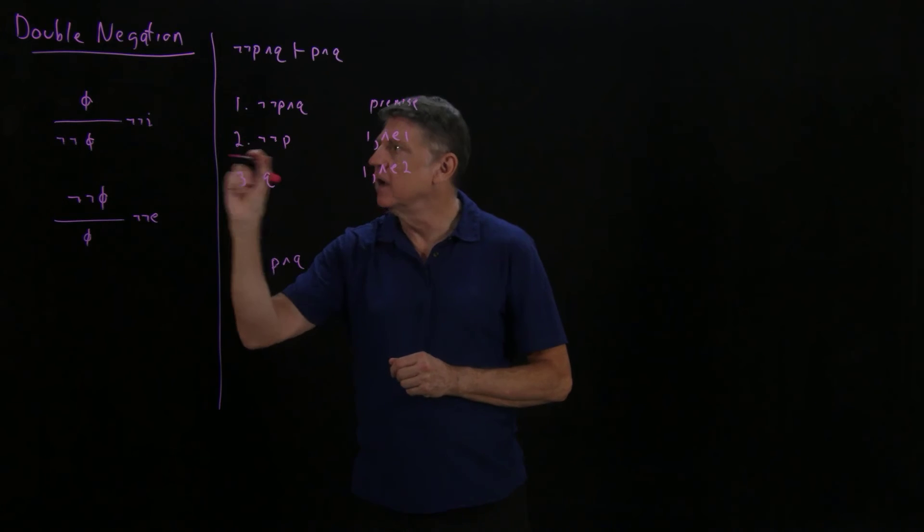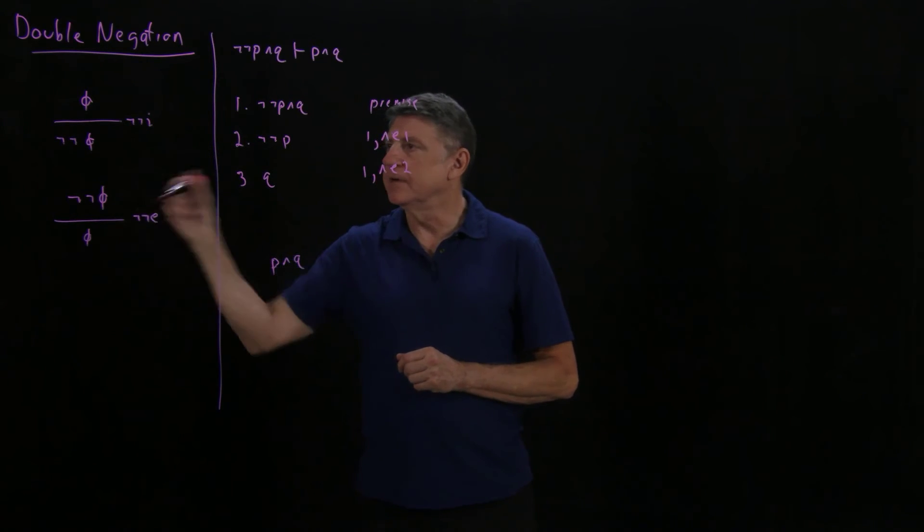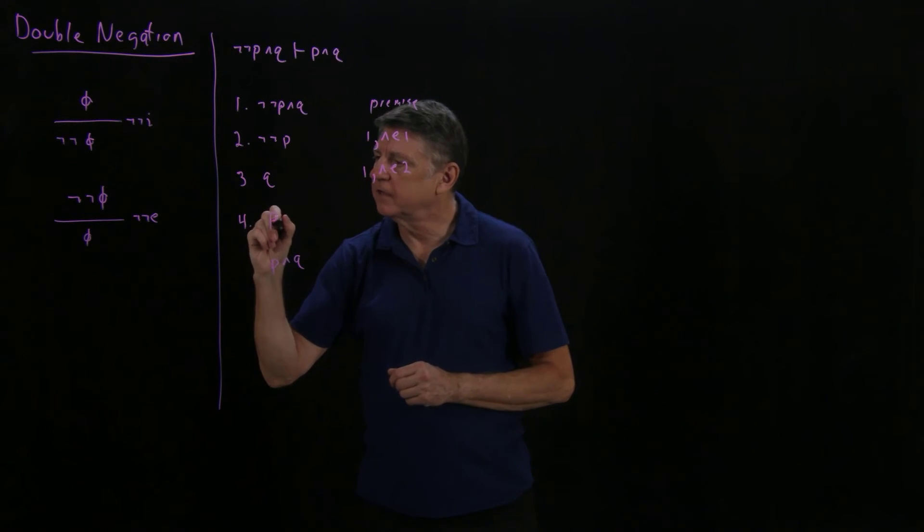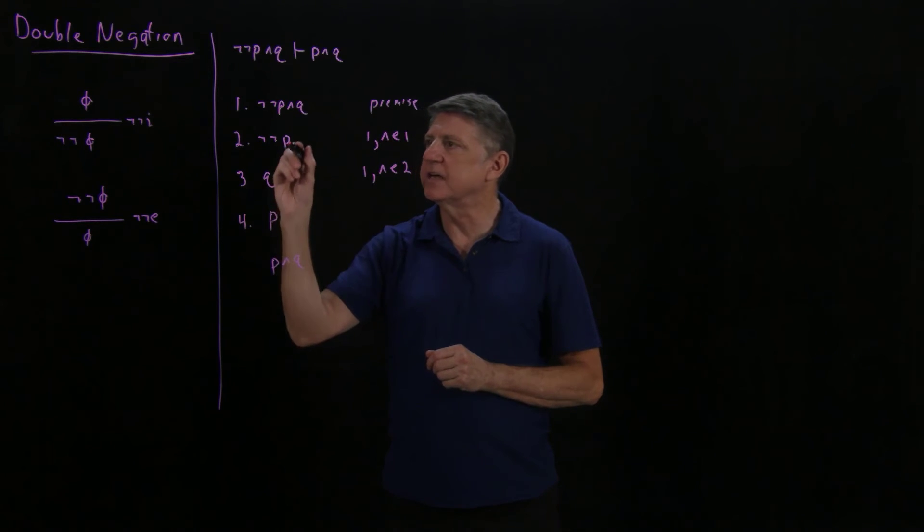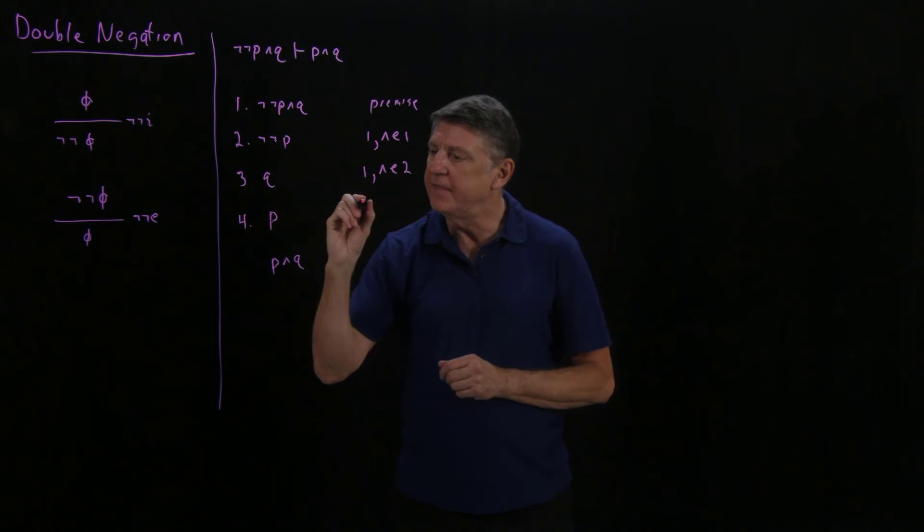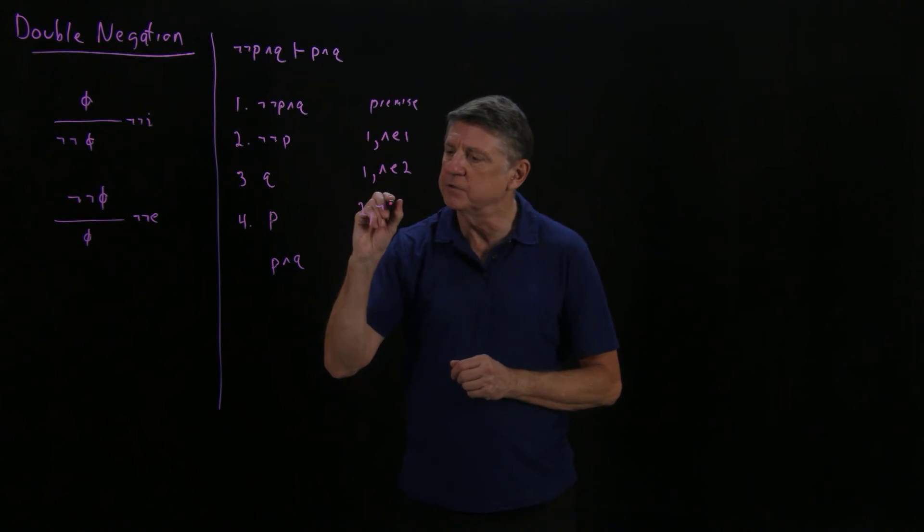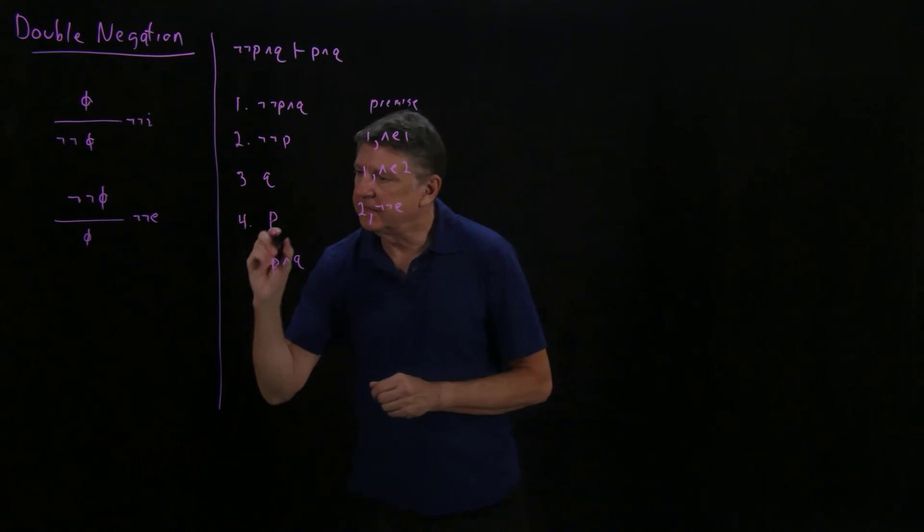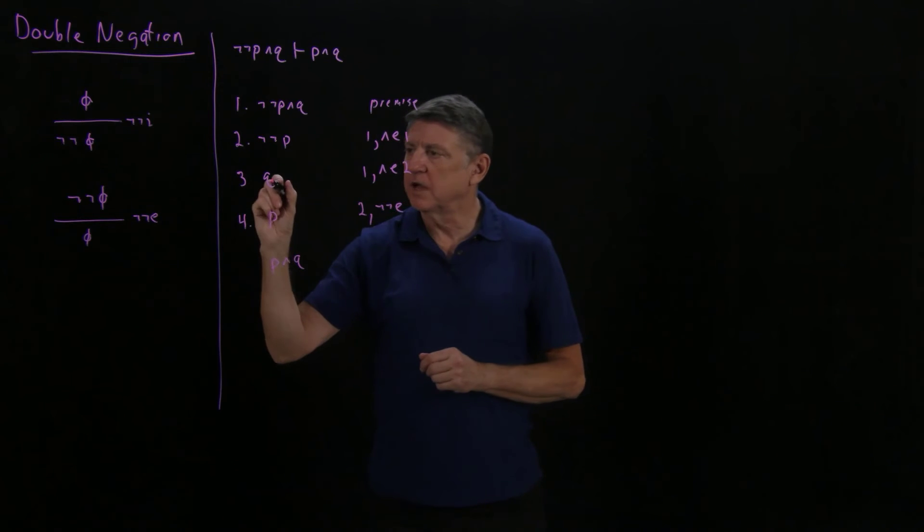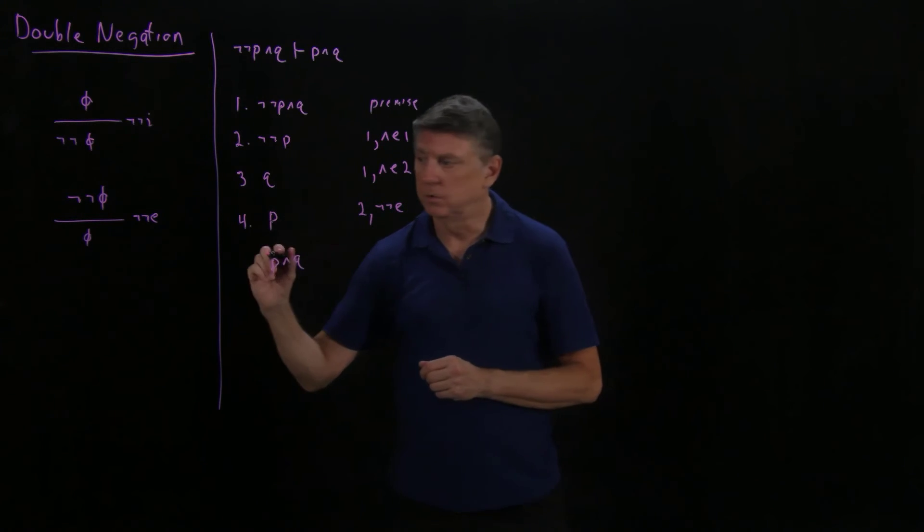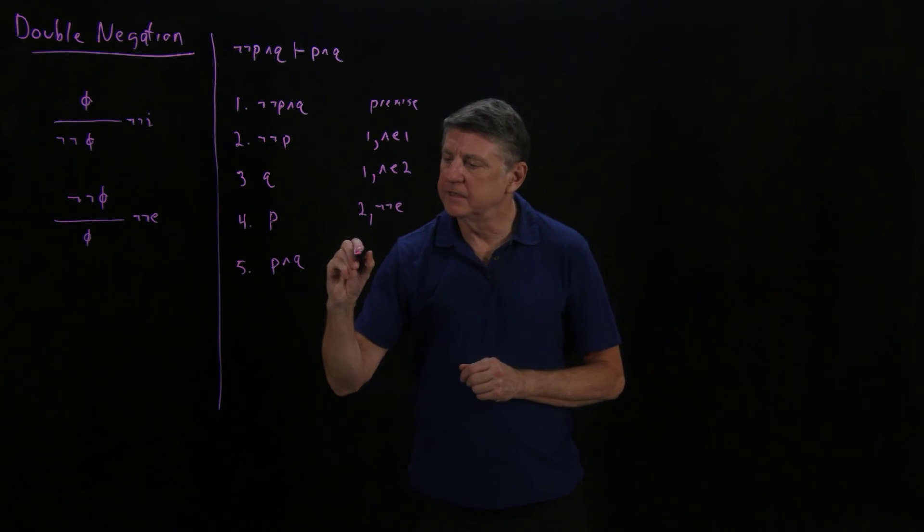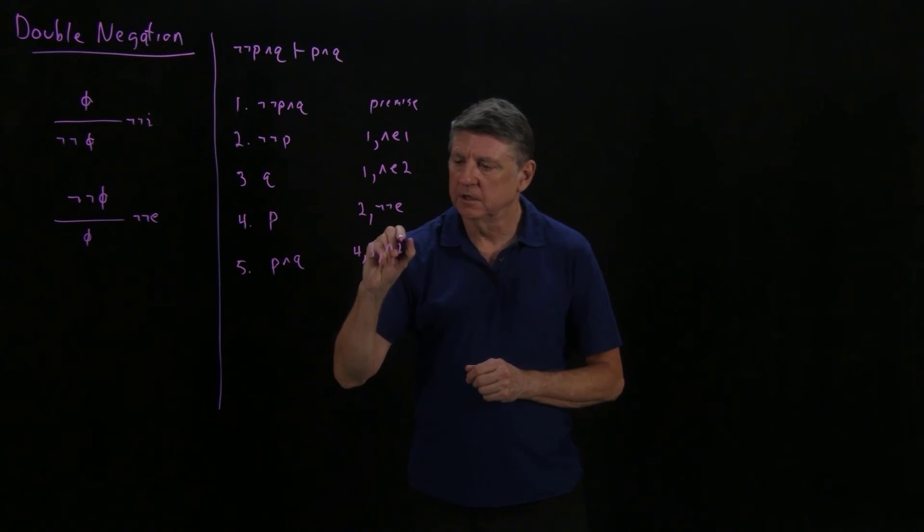Well, I can do that by applying double negation elimination. So I can say that I can write line p because I see not not p on its own line, and that is line two, and now by using double negation elimination, I can assert p, and now I have p on its own line and q on its own line, and so I'm able to conclude that p and q is true, and this is from line four and line three using conjunction introduction.